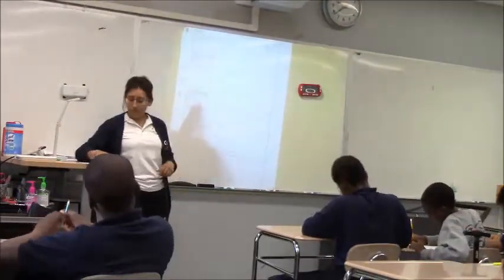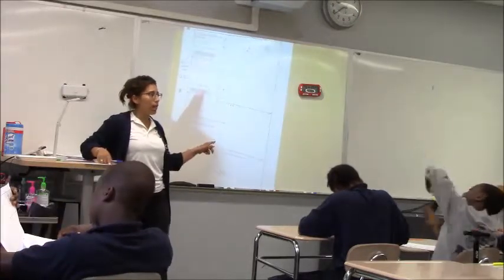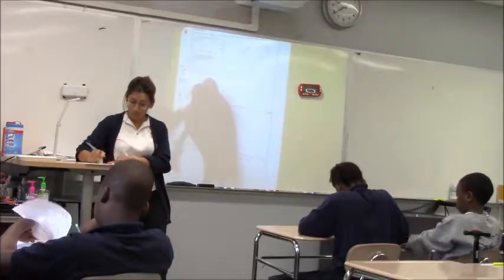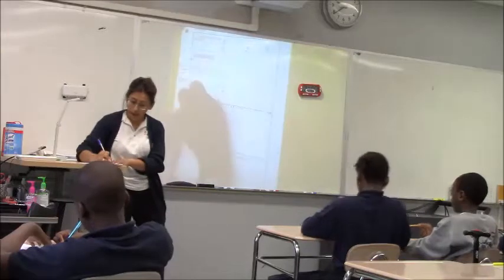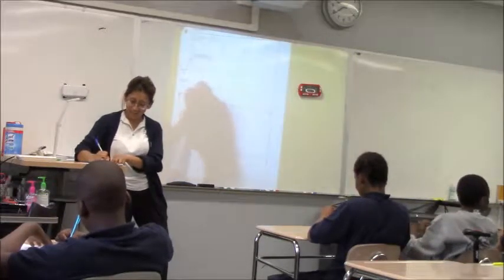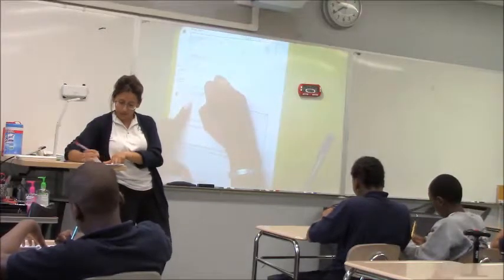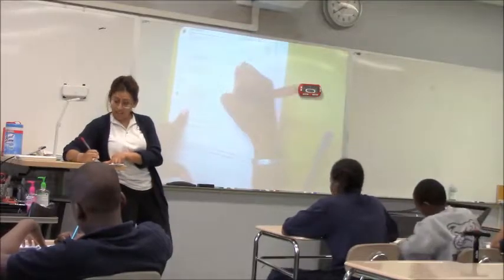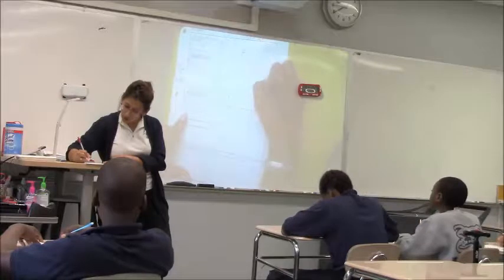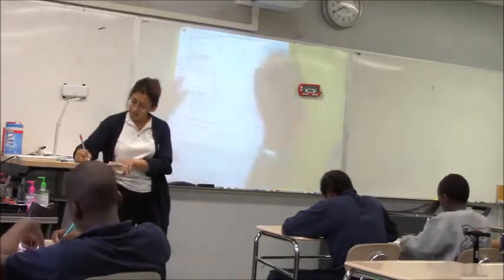Now let's go ahead and do line F. The rule is y is half as much as x. So whatever x is, my y is half. If I have zero, my y value is zero. When my x is six, my y is three. When I have ten, my y is five. And when I have twenty, my y is ten. So I have six, three; ten, five; twenty, ten. I'm going to go ahead and plot these. Six, three — ten, five — twenty, ten. Twenty went all the way up to ten. I'm going to put my ruler, connect. And this is line F.